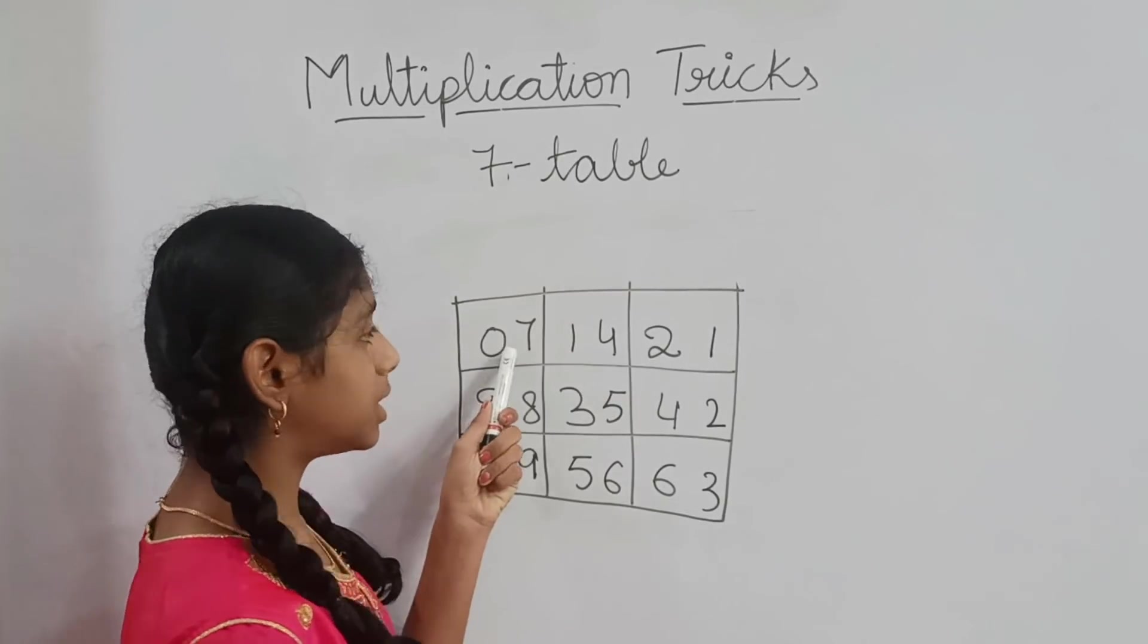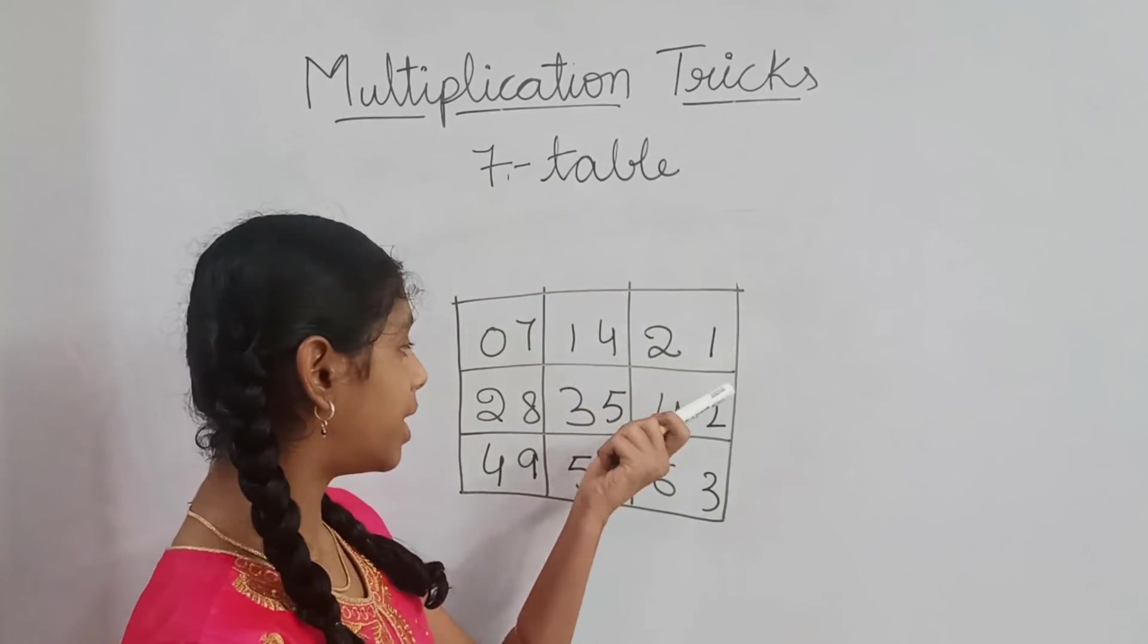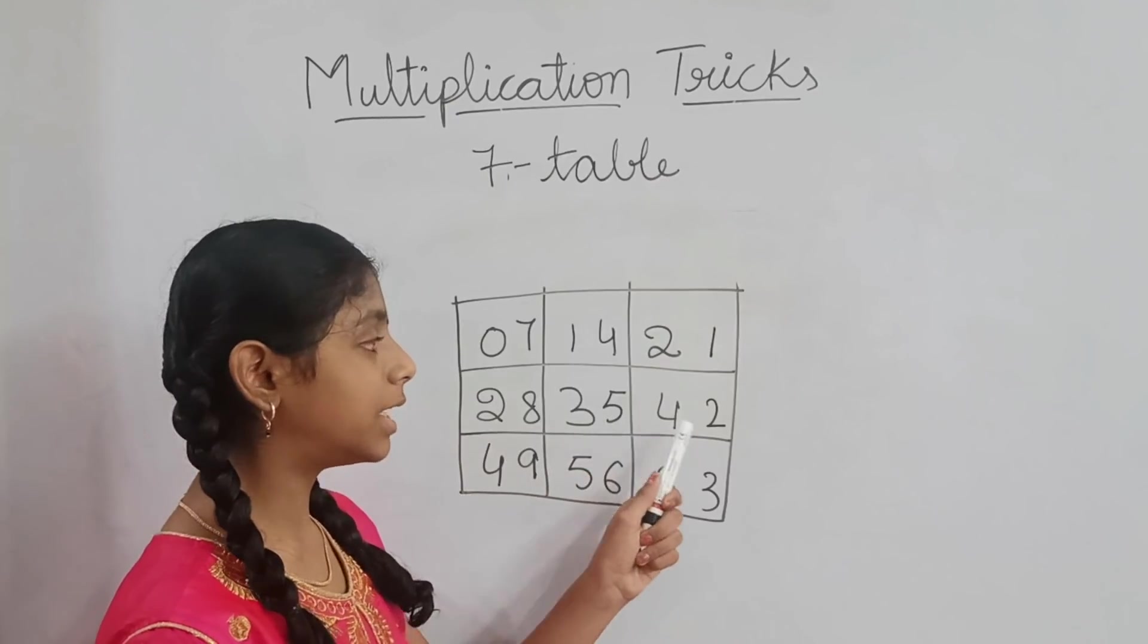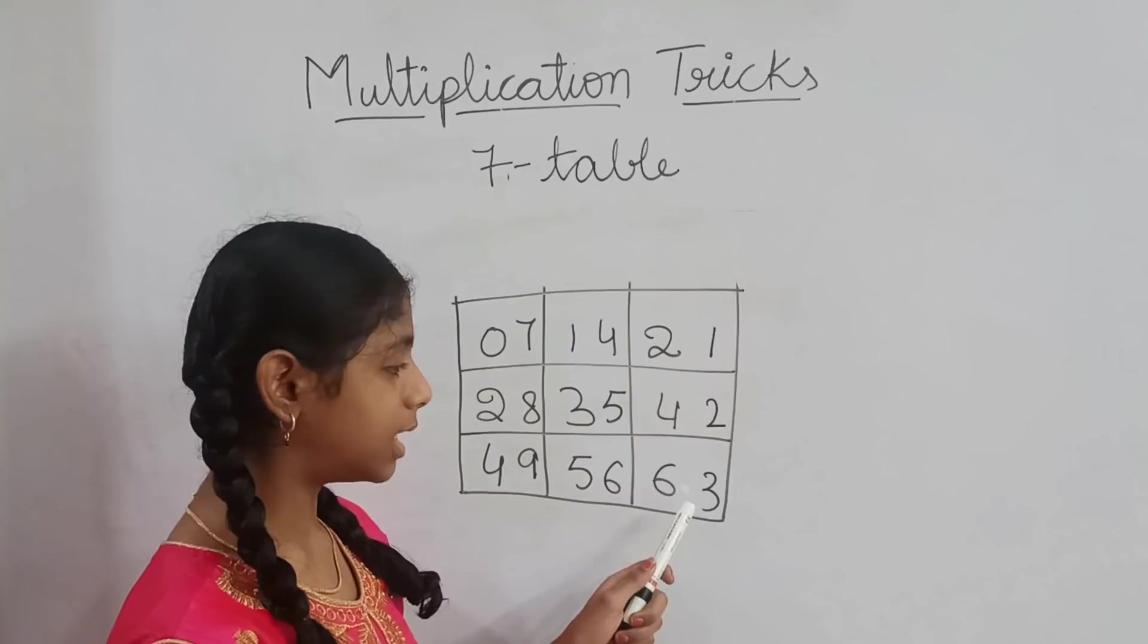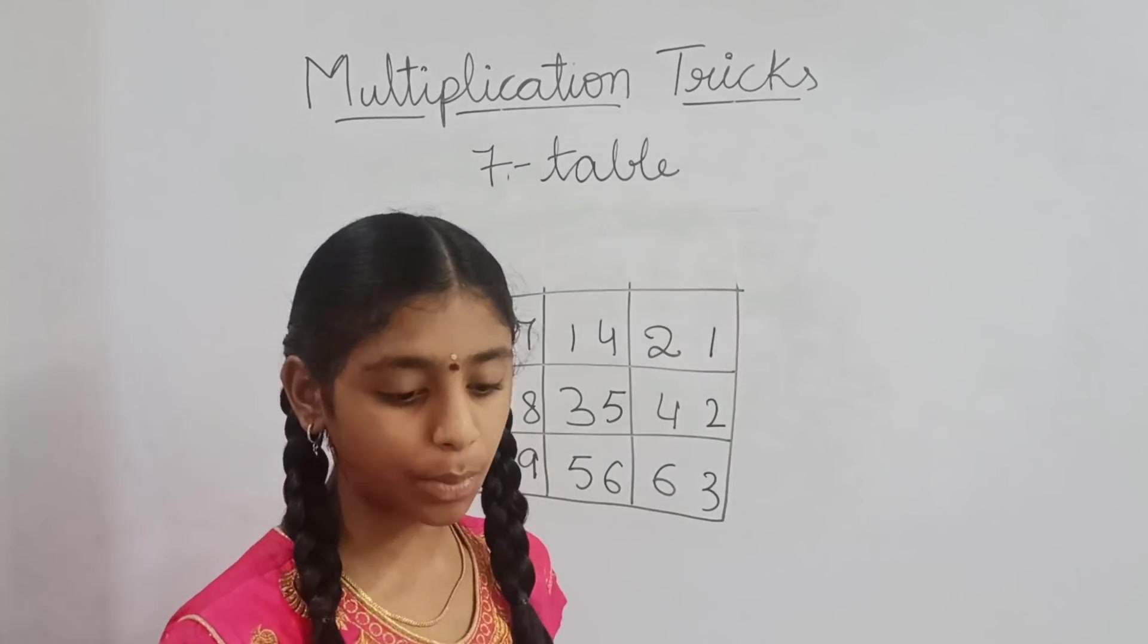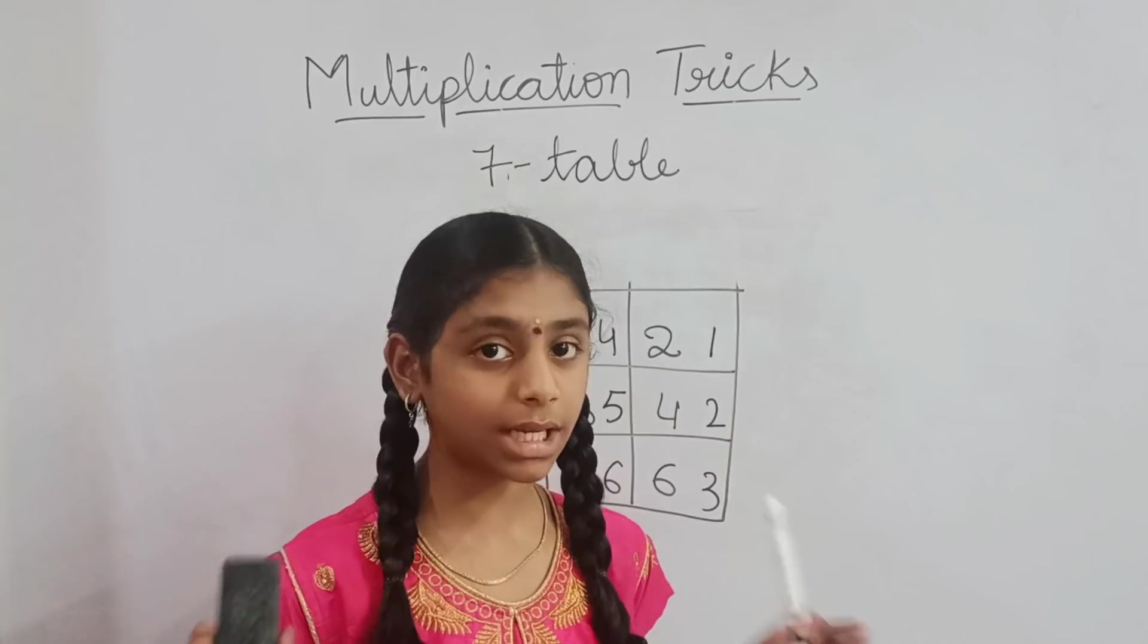Now, let's check. 7×1 is 7, 7×2 is 14, 7×3 is 21, 7×4 is 28, 7×5 is 35, 7×6 is 42, 7×7 is 49, 7×8 is 56, 7×9 is 63, 7×10 is 70. Our 7 table is also very easy.